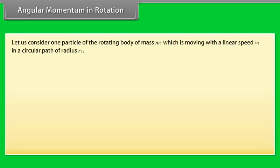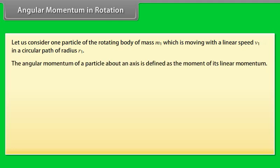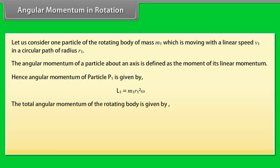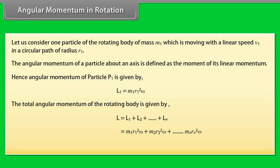For angular momentum in rotation: consider one particle of mass M1 moving with linear speed V1 in a circular path of radius R1. The angular momentum of a particle about an axis is defined as the moment of its linear momentum. Angular momentum of particle P1 is L1 = M1*R1²*ω. The total angular momentum is L = L1 + L2 + ... + Ln = M1*R1²*ω + M2*R2²*ω + ... + Mn*Rn²*ω. Thus L = I*ω.